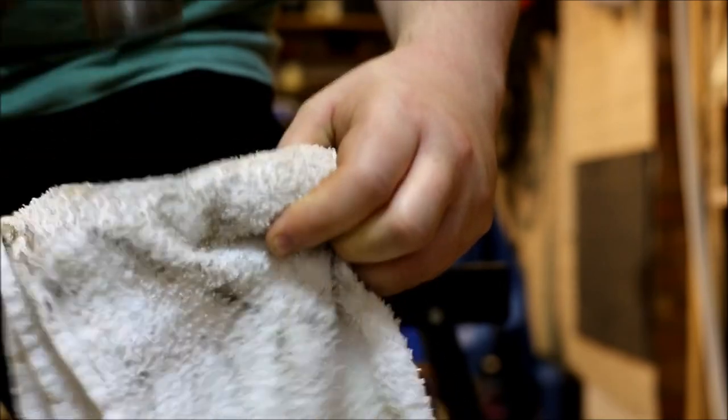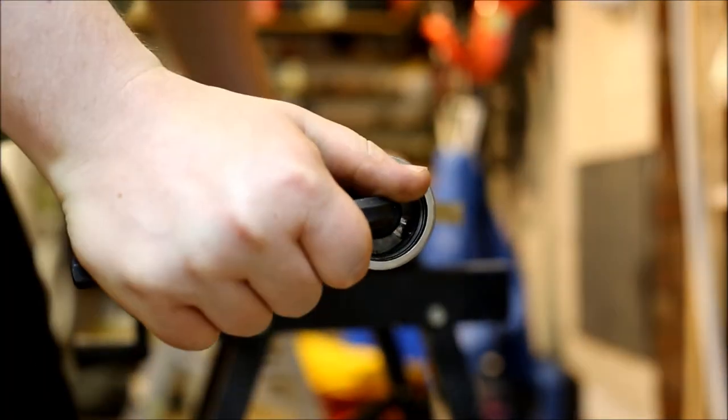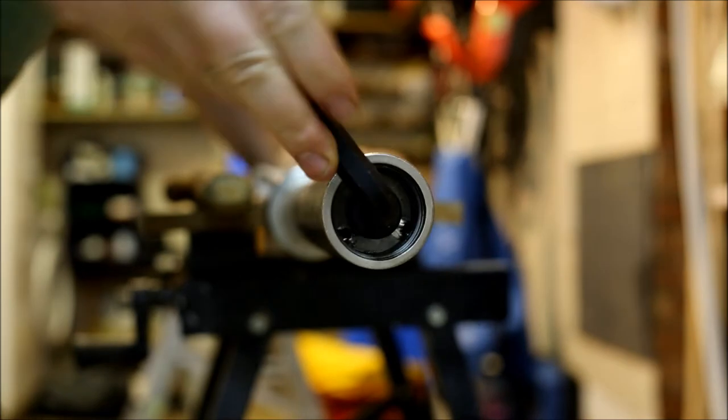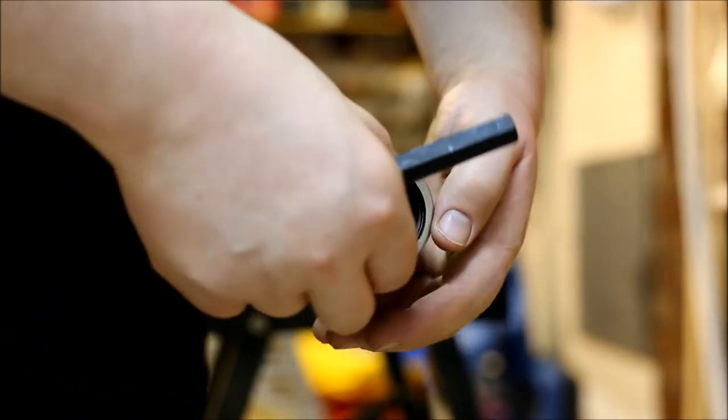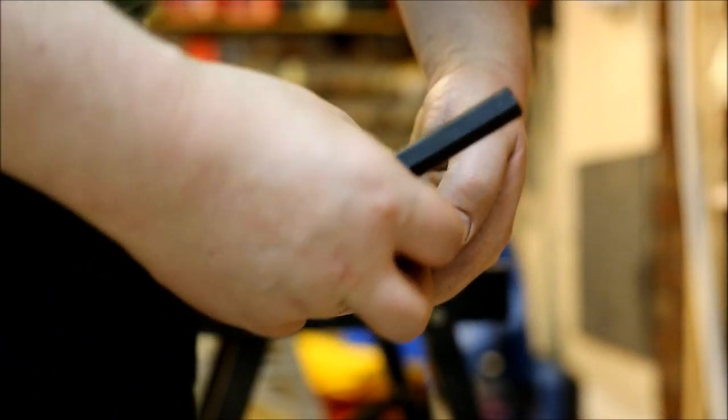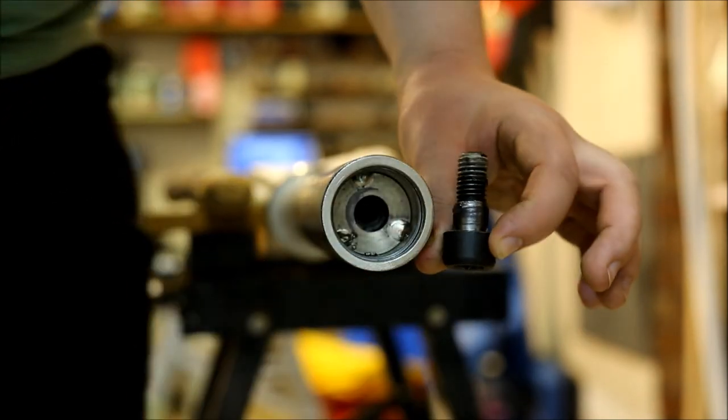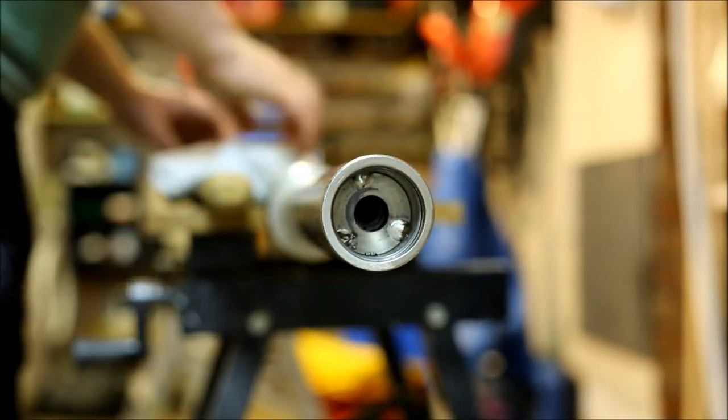There we go. Now this is the final thing holding the sleeve onto the shaft. Once you've undone that, the sleeve will slip right off. And there we go, you can see the nut holding it on there. So there we go, that slips off.